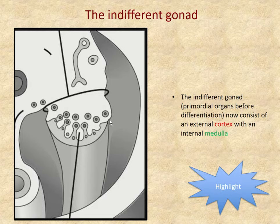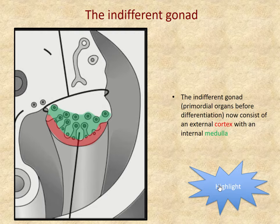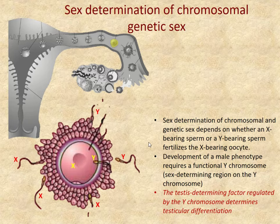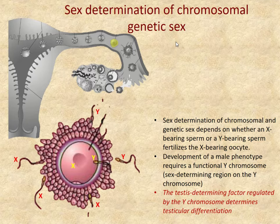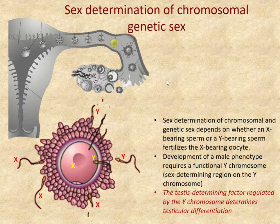The primary sex cords project downward into the outer cortex of the gonad, and the inside is the medulla. In the male testis, one region develops further, and in the ovary, the opposite region develops further. The chromosomal genetic sex of the embryo depends on the testis-determining factor on the Y chromosome. If this factor is functional and present, the embryo develops in the male direction; if not, it develops female.